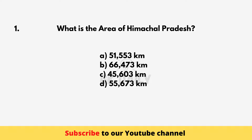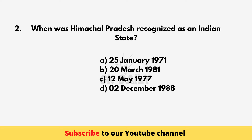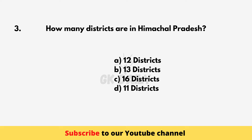What is the area of Himachal Pradesh? 55,673 square kilometers. When was Himachal Pradesh recognized as an Indian state? 25th January 1971. How many districts are in Himachal Pradesh? 12 districts.